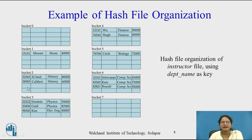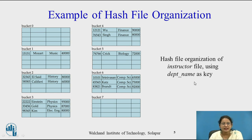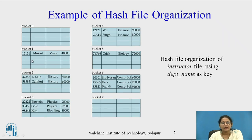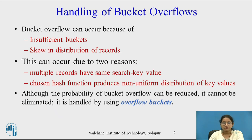Buckets 0 through 7 are shown. This is the hash file organization of the instructor file using department name as key. Music has hash value 1, so the music record is in bucket 1. Physics has hash value 3, so the address of the record with department name physics is bucket 3.